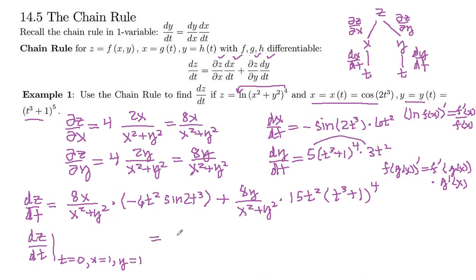So then this derivative will be—we'll just plug it in here: 0, 1, and 1. So 8 on top, 1² + 1² on the bottom. Times 15 times 0². Oh, that one's going to be 0 also. So this derivative is equal to 0.